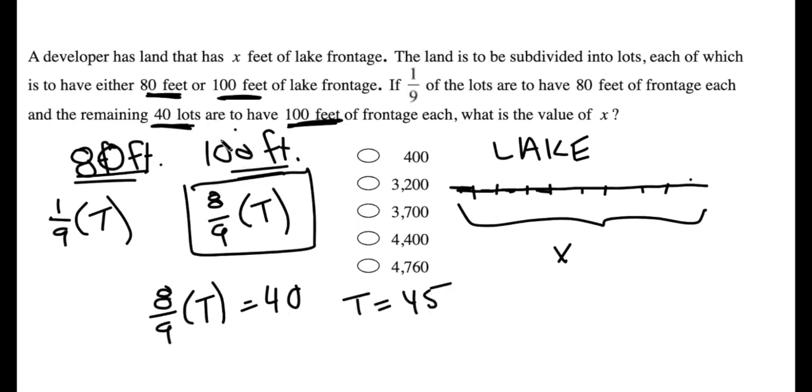Okay, so I have 40 hundred-foot lots, and by the remainder then, must be five, right? Or one-ninth of 45. So 40 hundred-foot lots and five 80-foot lots.